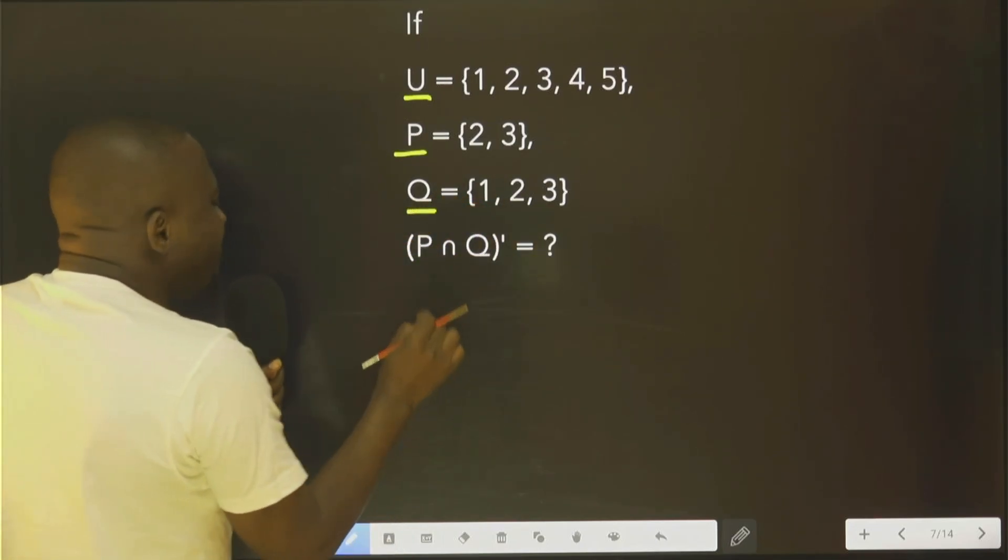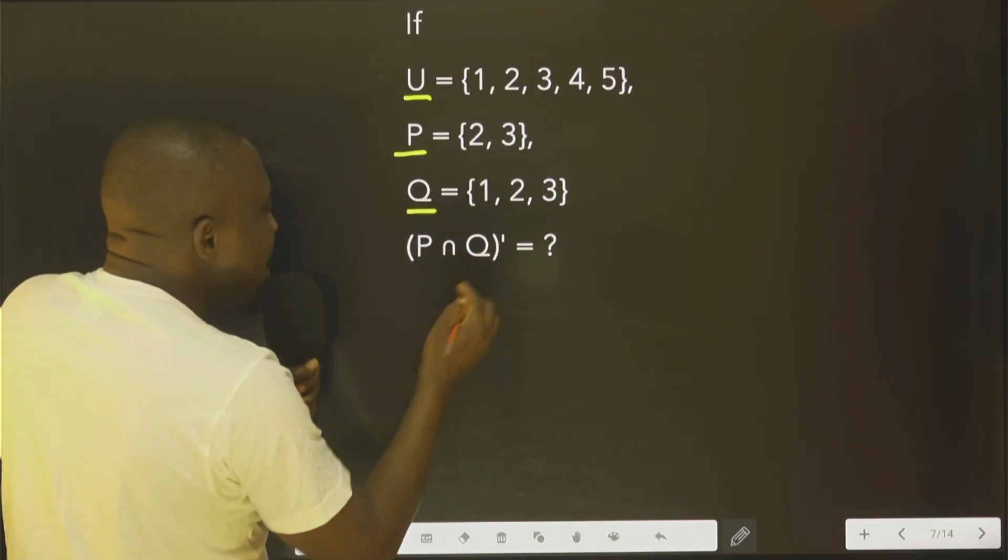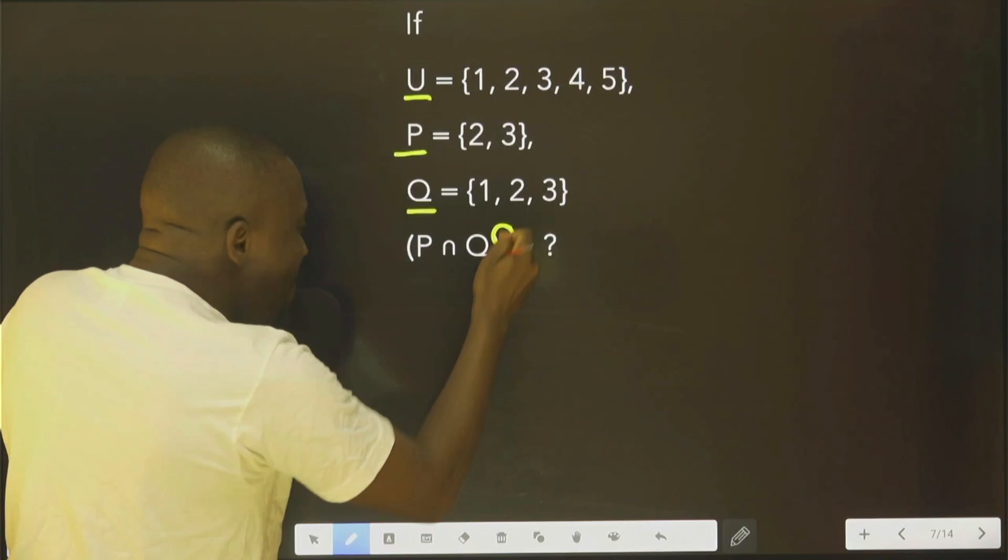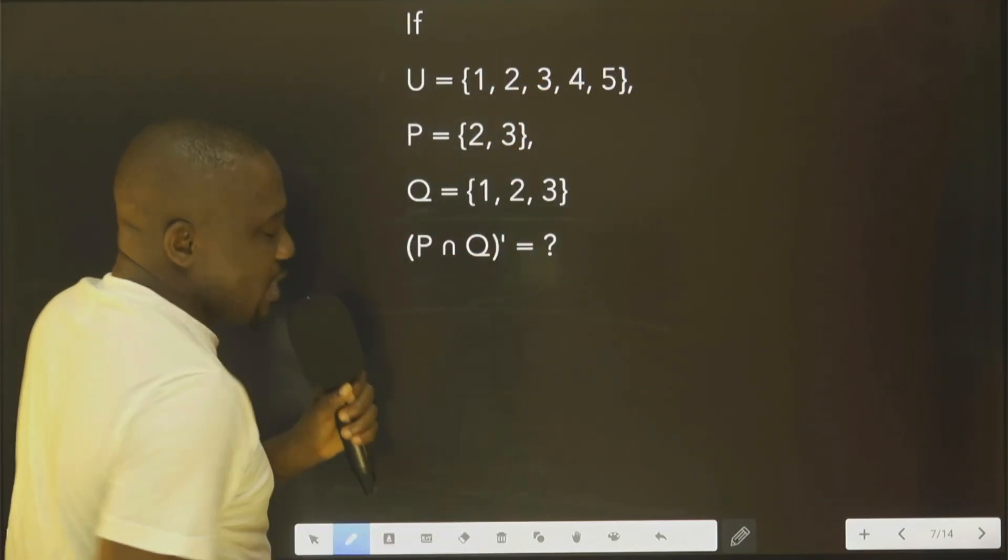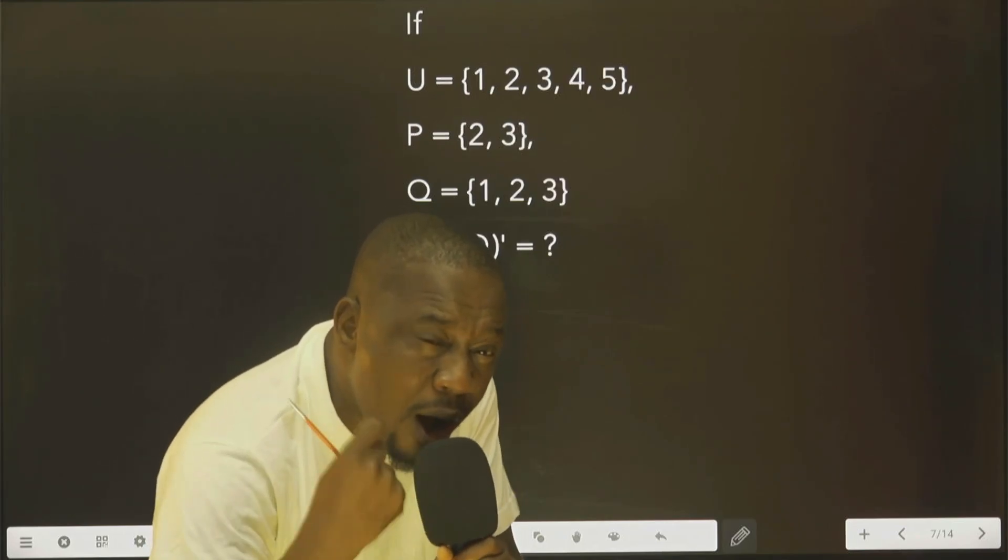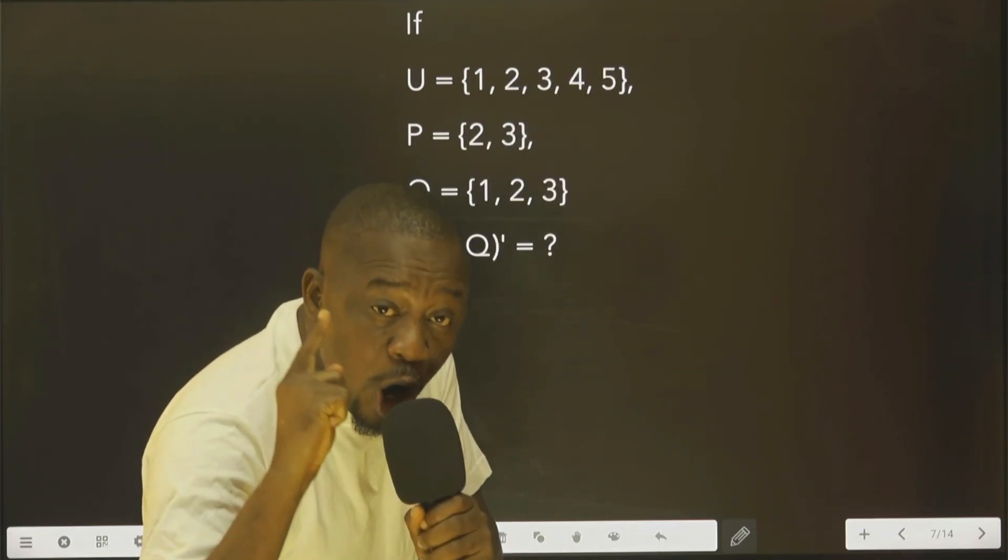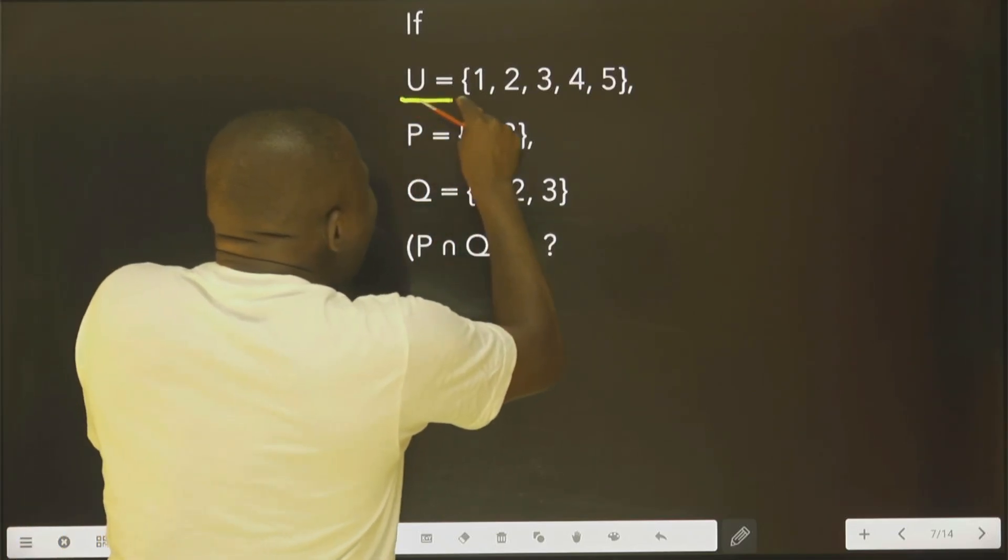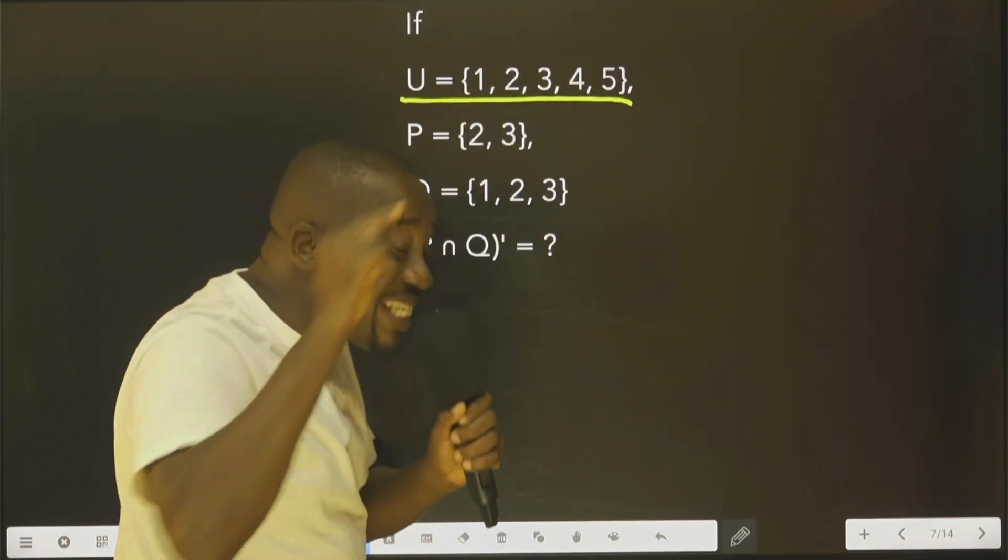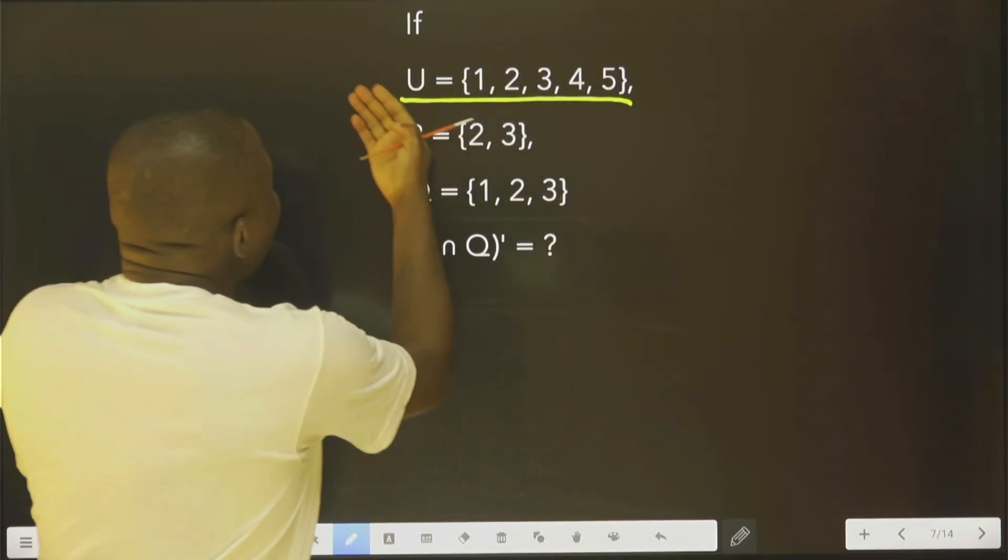should find the complement of P intersect Q. This symbol you are seeing here means complement. What is the meaning of complement? Complement means what is in the universal set that is not in that set.